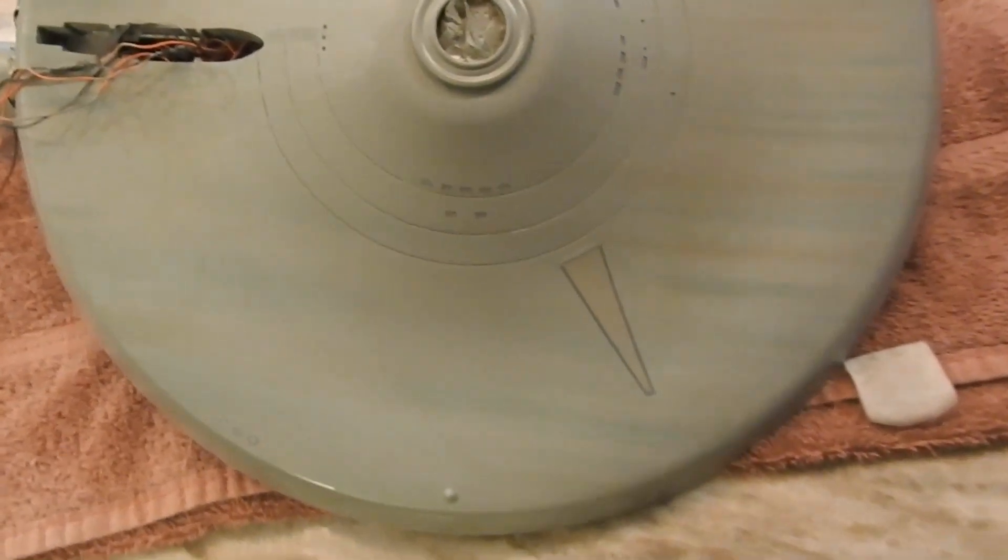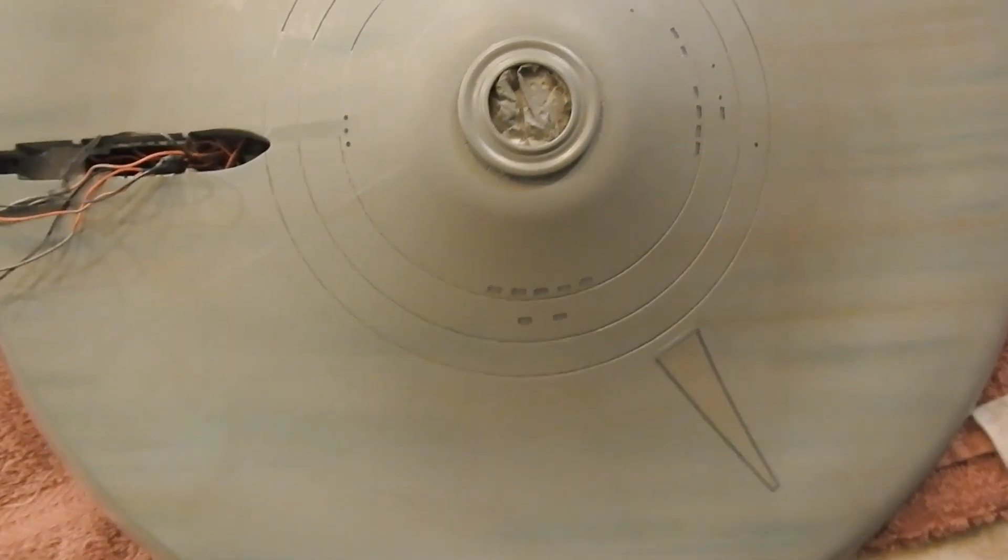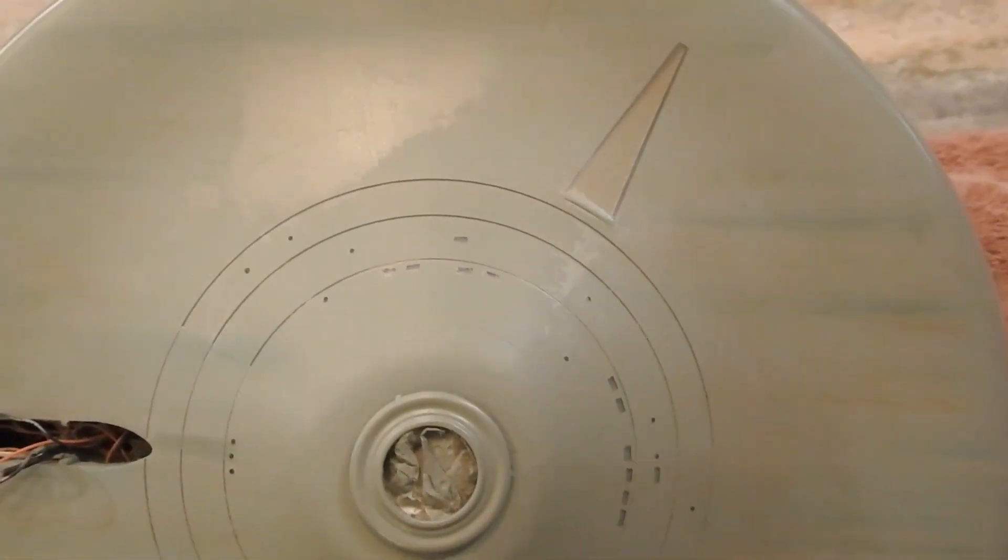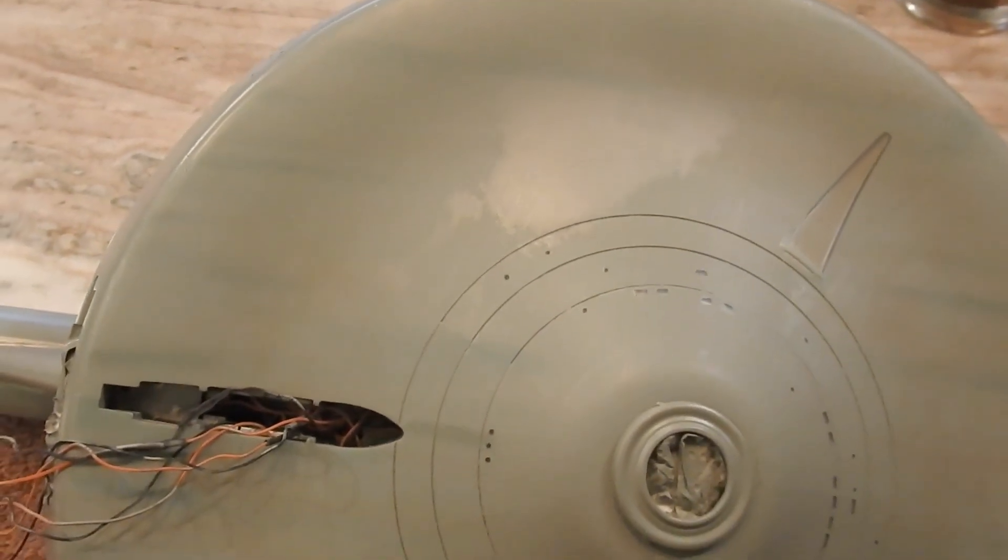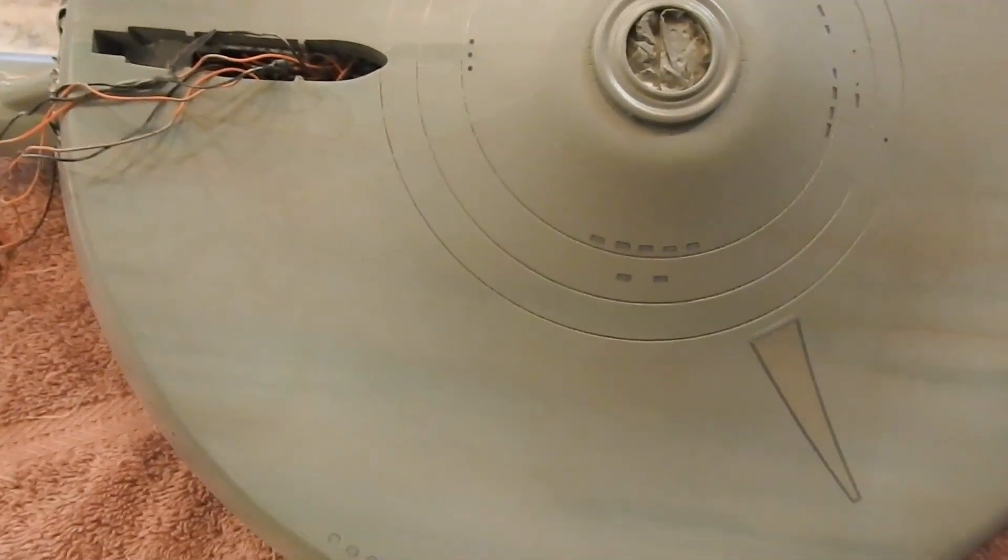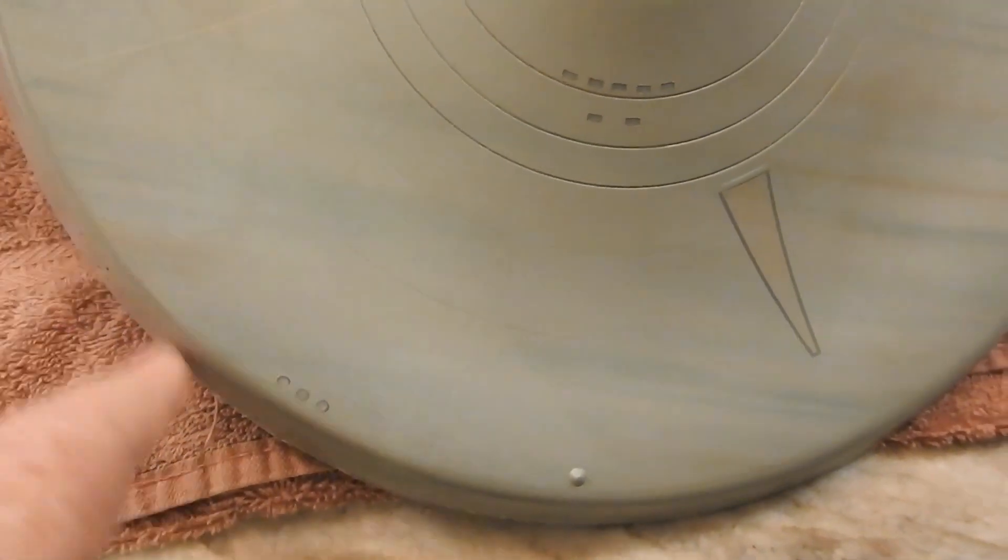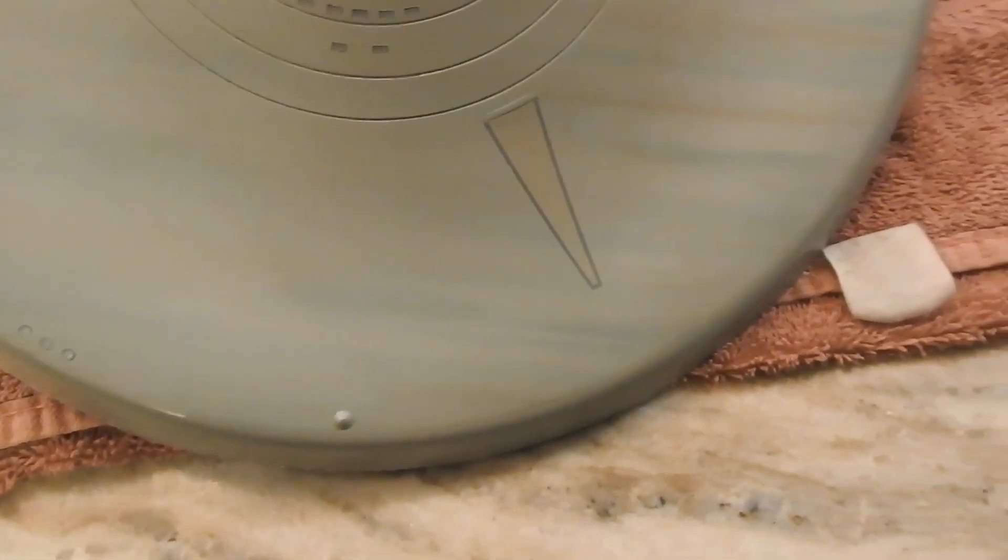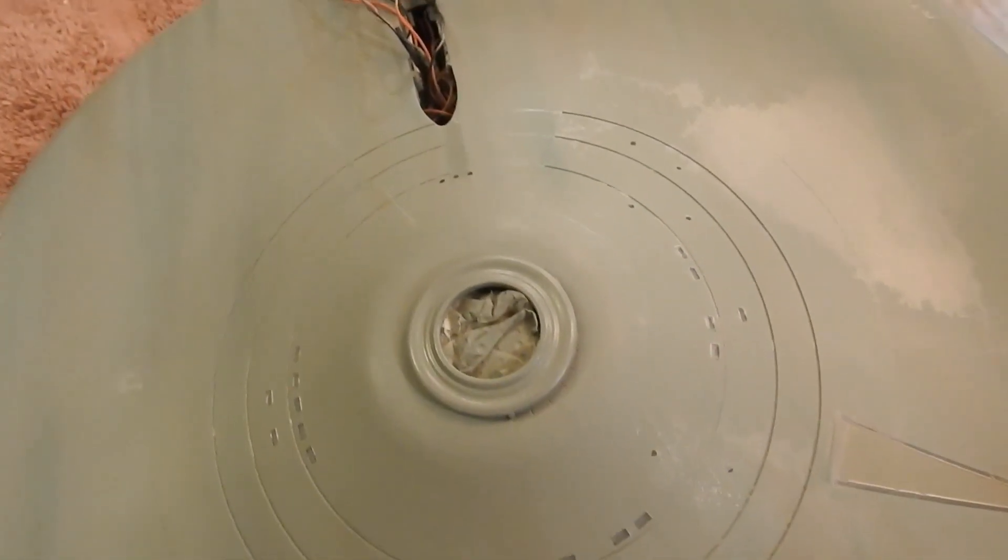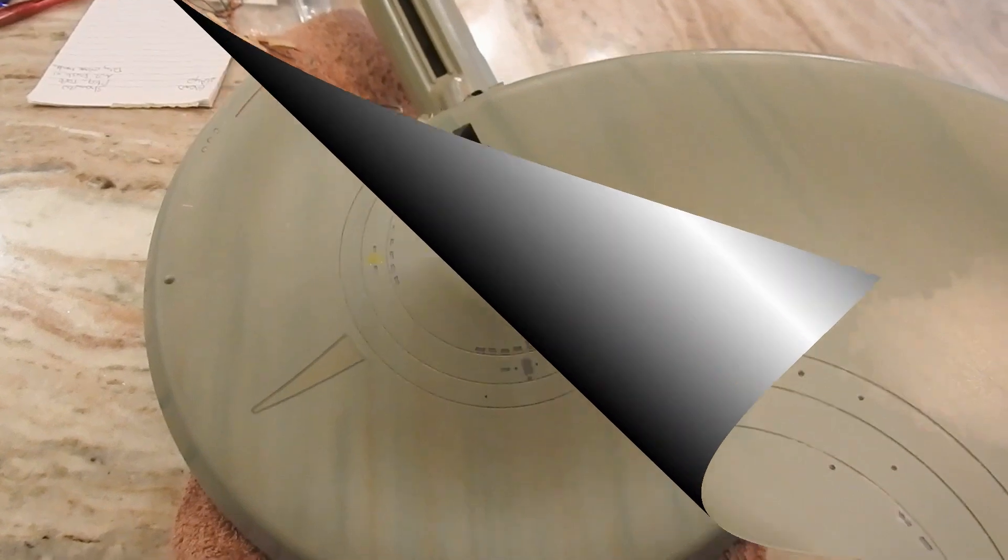So I got the bottom done. This is pretty heavily weathered. Glare showing up there, but other than that it came out pretty good. Once I get the top done, I have to do the rim of the saucer with the decals. Overall came out pretty decent.